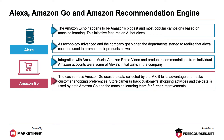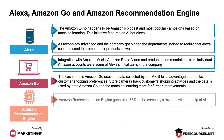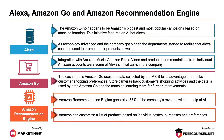Next up, Amazon Go. The cashier-less Amazon Go uses the data collected by the marketing information system to its advantage and tracks customer shopping preferences. Store cameras track customer shopping habits and data is used by both Amazon Go and the machine learning team for further improvements. And finally, Amazon's recommendation engine. Did you know? Amazon's recommendation engine generates 35% of the company's revenue with the help of AI. Amazon can customize a list of products based on individual taste, purchases, and preferences.